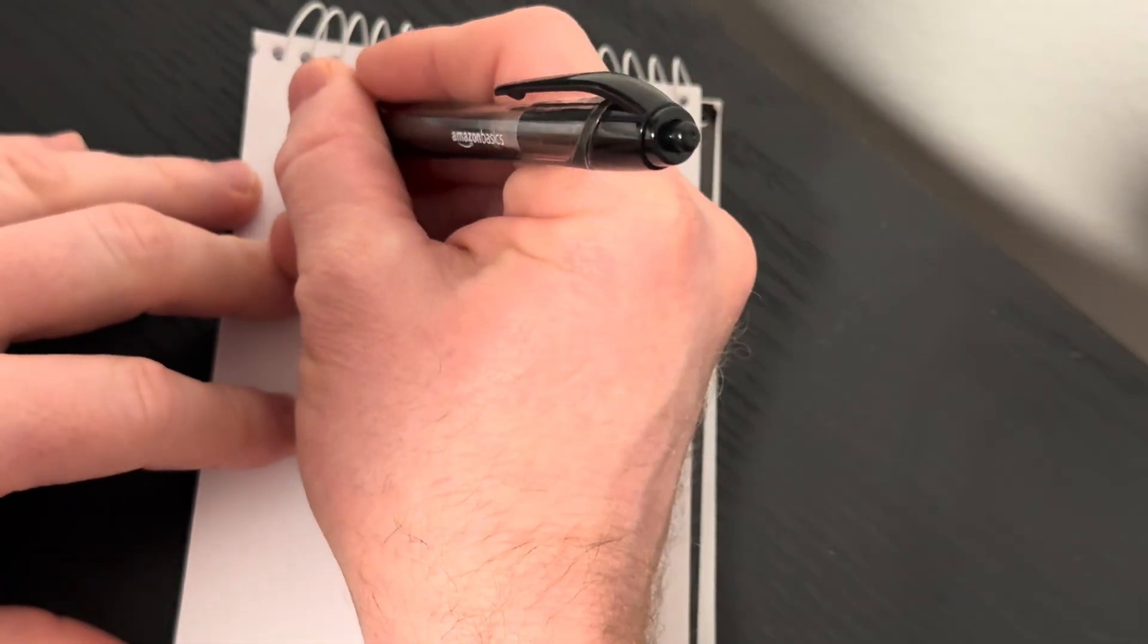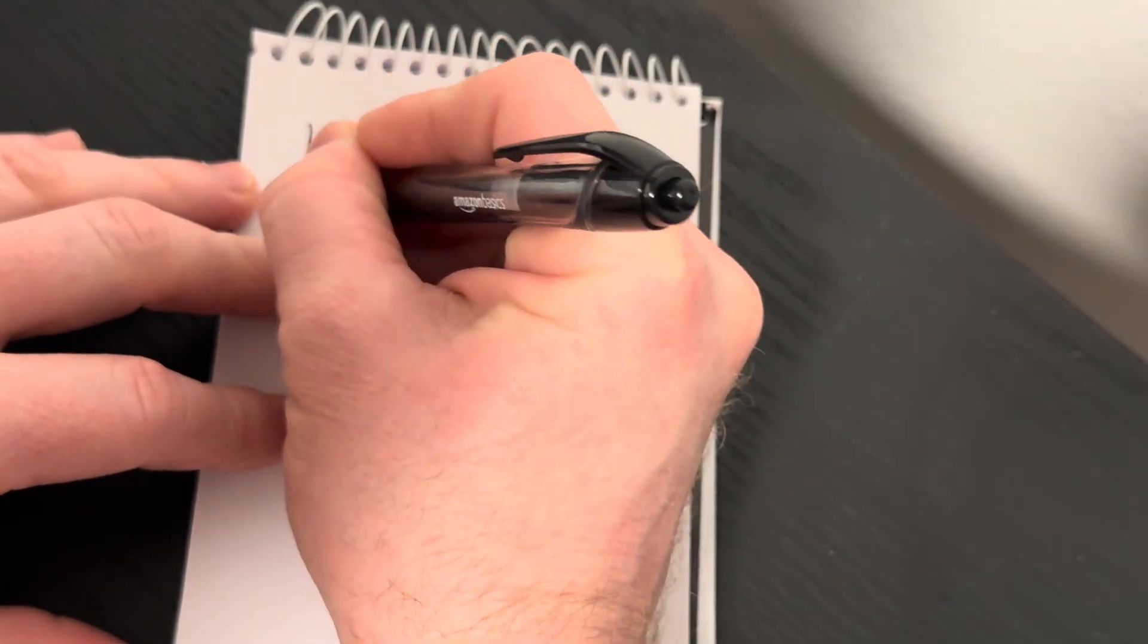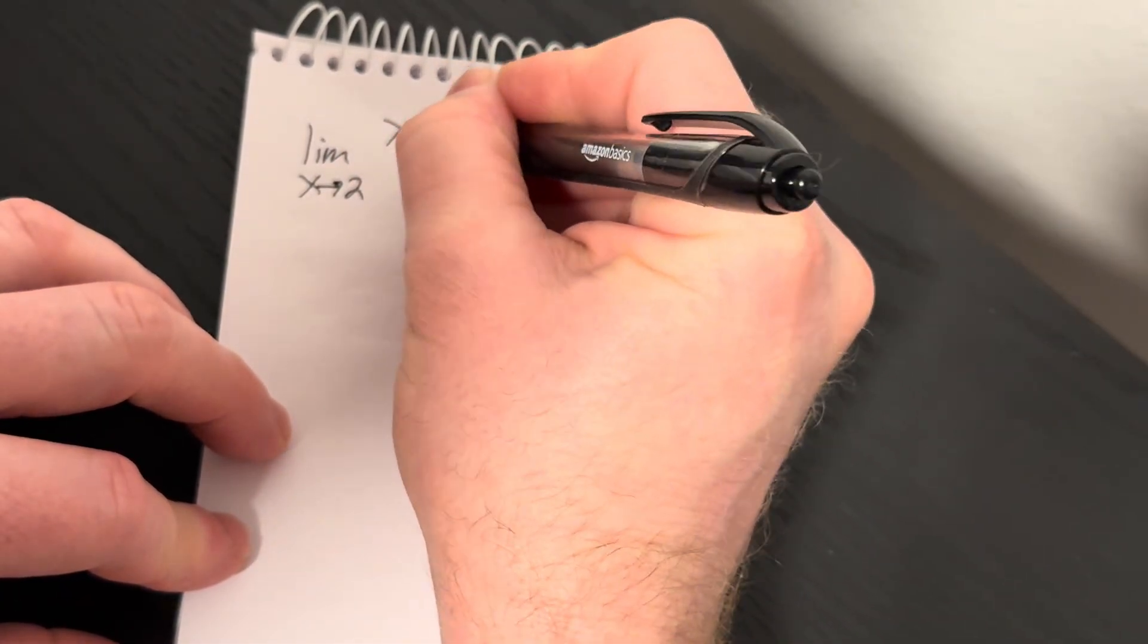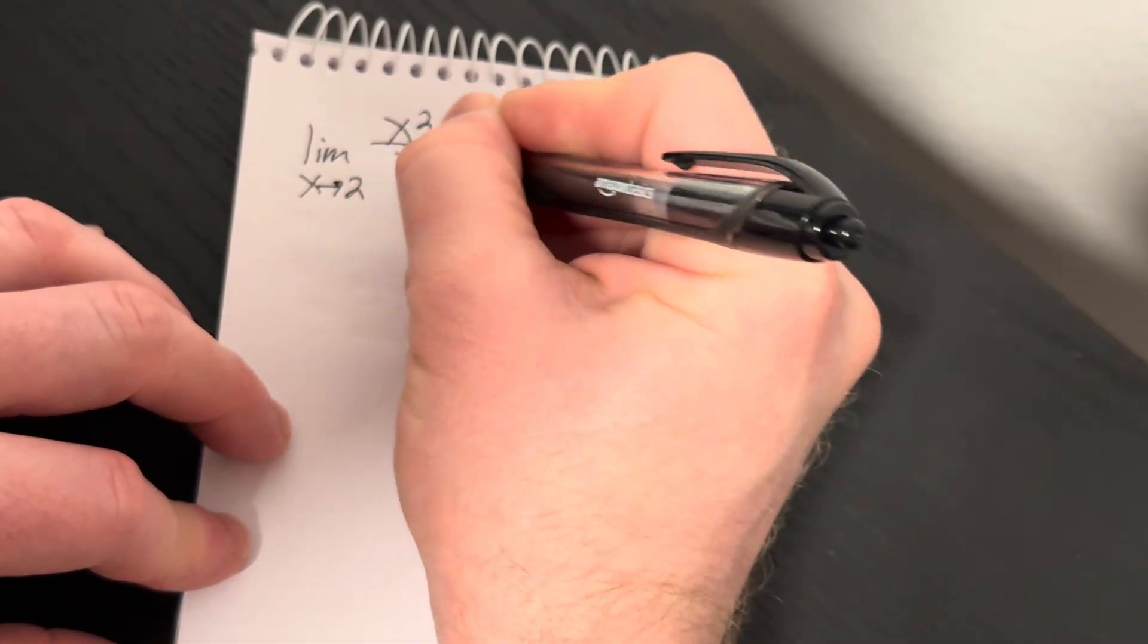Hi, in this video we're going to work out a limit. We have the limit as x approaches 2 of x squared minus 4 over x minus 2.